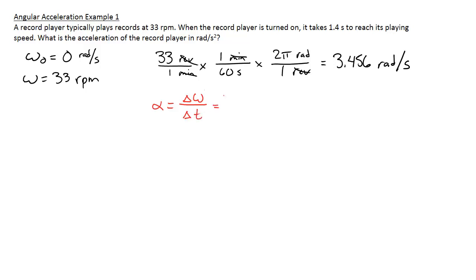Now that I have my final velocity and my initial velocity starting from rest, it's just 3.456 radians per second minus zero radians per second, final minus initial, divided by the time it took, 1.4 seconds. So 3.456 divided by 1.4 seconds gives me 2.469 radians per second squared.